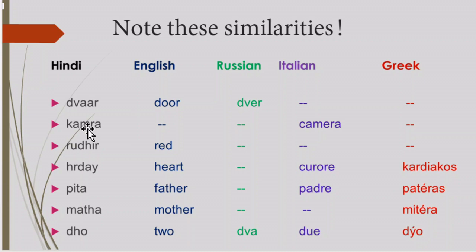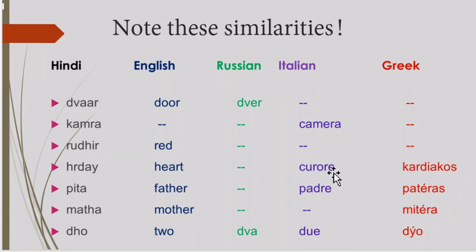In Hindi we have the word 'kamara,' meaning room. And in Italian we have the same word, 'camera,' which means room, from which the word 'camera' also came. And we have 'Rudhir' and 'Rudhiram,' which means blood. In English we have 'red.' In Hindi we have 'Hridai,' and in many Indian languages we have 'Hridai,' 'Hridayam,' which is 'heart' in English. In Italian, 'cuore,' 'core.'